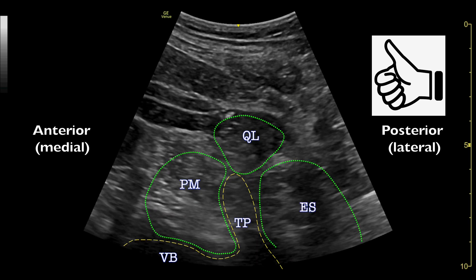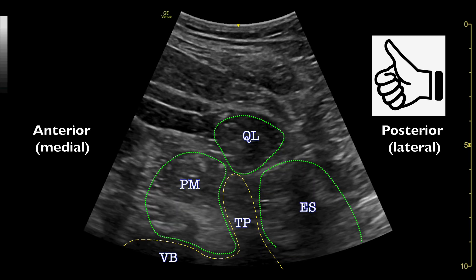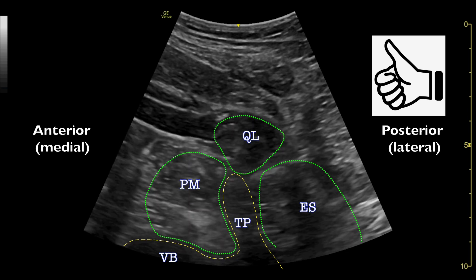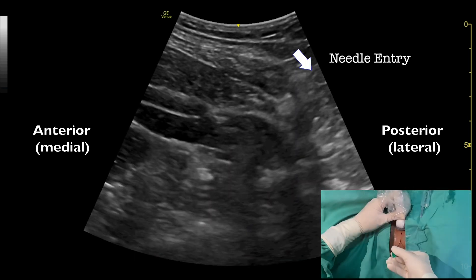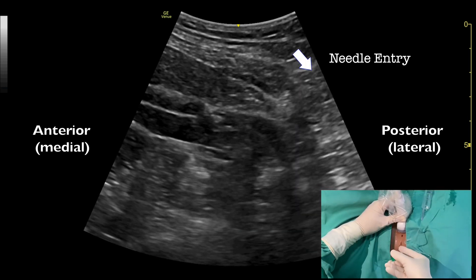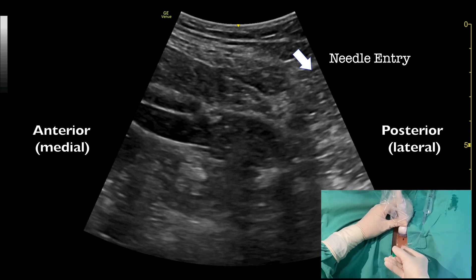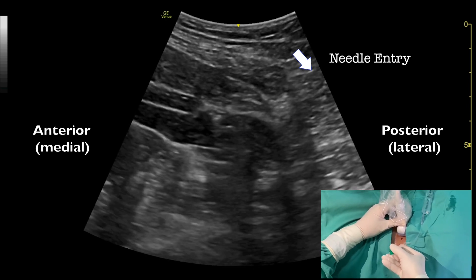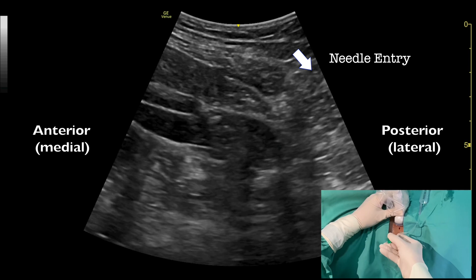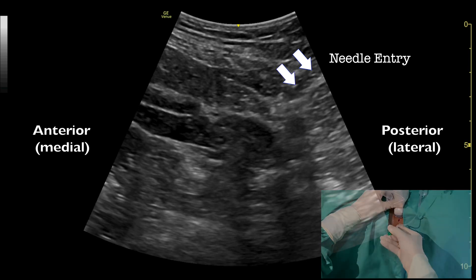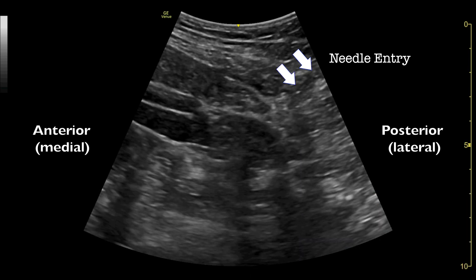The depth of the image usually needs to be increased to get this view. An 80mm block needle is inserted in-plane from the posterior end of the transducer. The needle will go through the quadratus lumborum muscle.